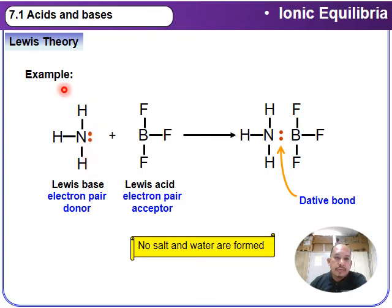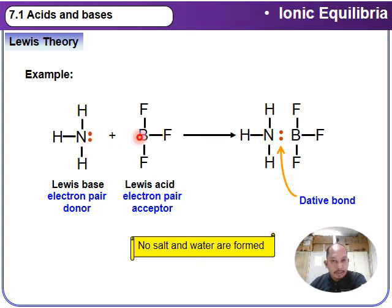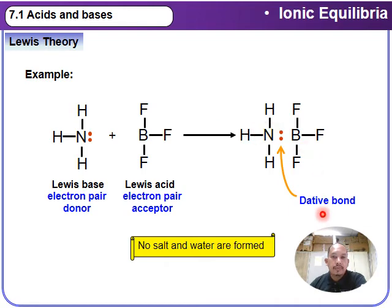This shows how the Lewis theory works in practice. If you draw the NH₃ molecule, it has a lone pair on the central nitrogen atom, while BF₃ is electron-deficient. The lone pair from NH₃ is donated to the boron atom in BF₃ to form a dative covalent bond. Notably, no salt or water is formed during this reaction, which distinguishes it from the Arrhenius and Brønsted-Lowry reactions.